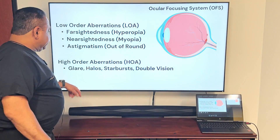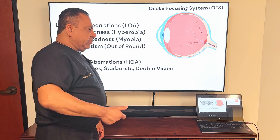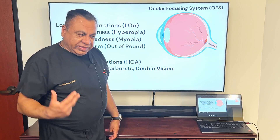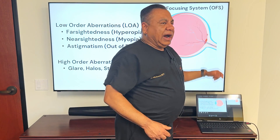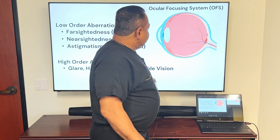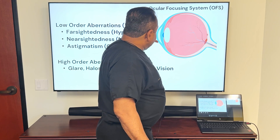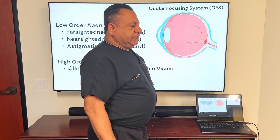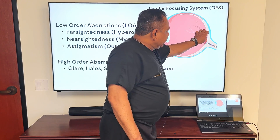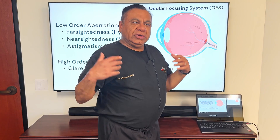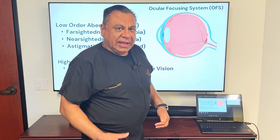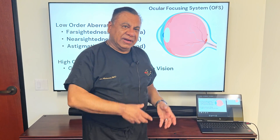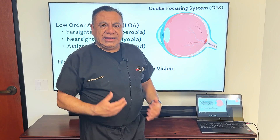Higher-order aberrations cause glare, halos, starbursts, double vision, and can even cause quite a bit of headache and pressure in the head simply because the brain has to compensate for them. When you focus light through the cornea, through the lens, to the retina, it's sent to the brain, which has to make sense of it — interpolating and constructing the final image, just like a digital camera sensor sends data to a processor to create the image.